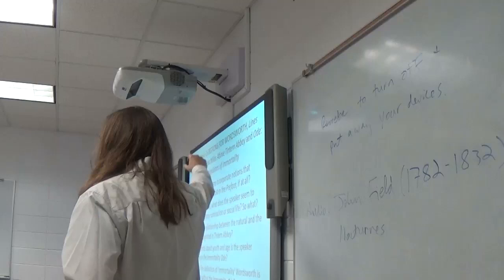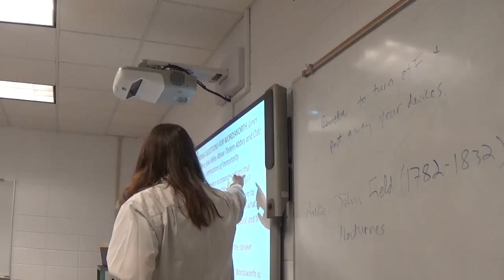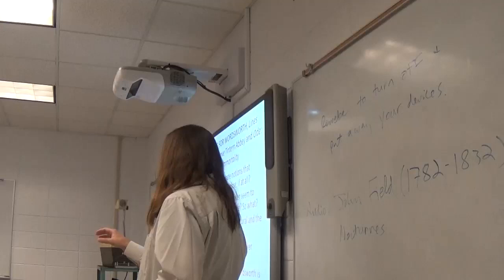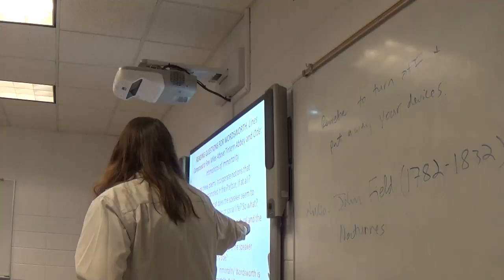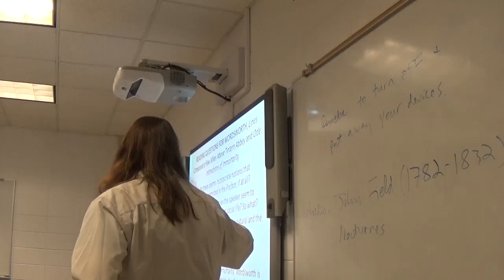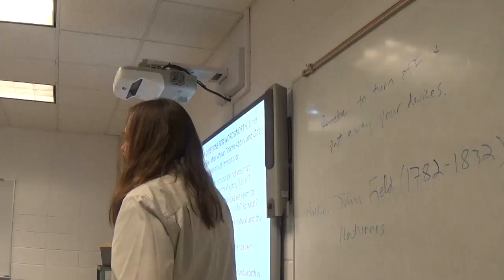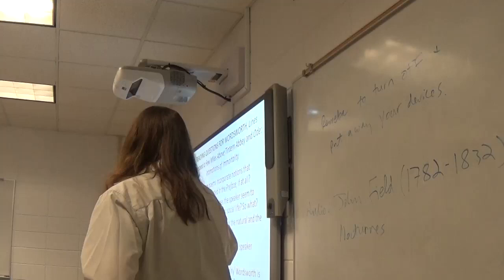You're going to be reading lines composed a few miles above Tintern Abbey and Ode, Intimations of Immortality, and this is what I want you guys thinking about. First, I want you thinking about how the poems incorporate notions that Wordsworth promoted in the preface, if at all. Secondly, in Tintern Abbey, what does the speaker seem to prefer, solitary rumination or social life and so what? Third, what is the relationship between the natural and the artificial depicted in Tintern Abbey? Fourth, what points about youth and age is the speaker making in the immortality ode? And finally, what's the definition of immortality Wordsworth seems to be working with in the immortality ode?